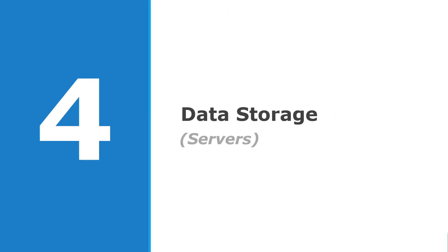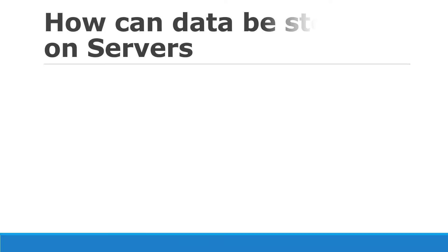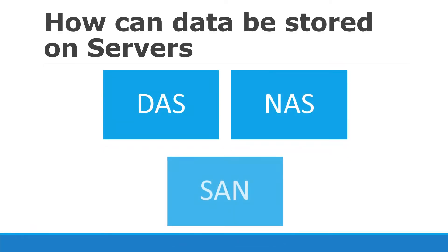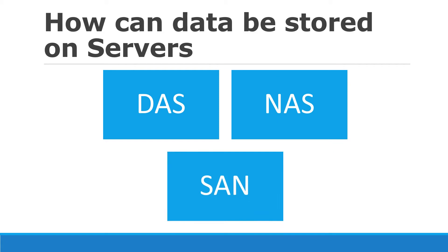Today we are going to explore the storage options available for a server. Server data can be stored on three types of storage devices. They are called DAS, NAS, and SAN. What are these jargons? Let's have a look at them further.